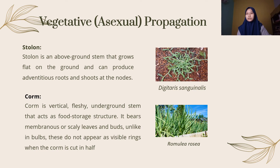A corm is a vertical, fleshy underground stem that acts as a food storage structure. It bears membranous or scaly leaves and buds. Unlike in bulbs, these do not appear as visible rings when the corm is cut in half. An example is Romulea rosea.